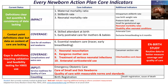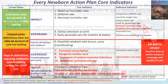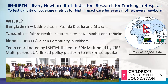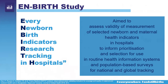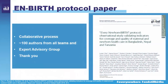We were interested in core indicators rising up through the data pyramid — aggregated data from routine registers that might be feeding into electronic HIS such as DHIS2. The core indicators include impact, coverage, and input indicators for newborns, with increasing consensus around which are most important. It was a collaborative design with research partners from ICDDRB in Bangladesh, Ifakara Health Institute in Tanzania, and Golden Community in Nepal, and the London School, linking also with the UN and other data-interested people.